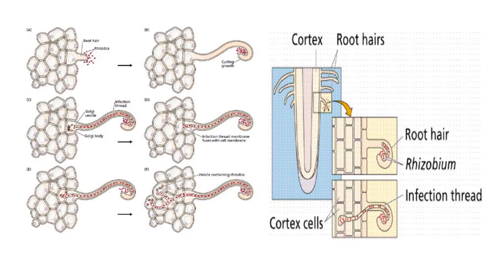How does rhizobium help in nitrogen fixation? First, the interaction between rhizobium and the legume is mediated by flavonoids produced and secreted by the legume. Exopolysaccharides produced by rhizobium interact with lectins produced from the plant. Exopolysaccharides help to bind rhizobium cells to the root hair.